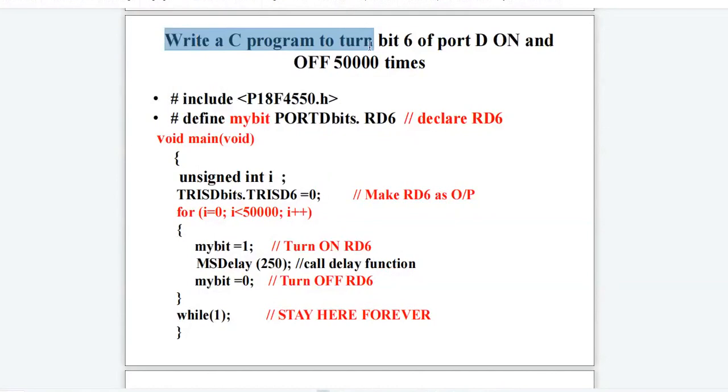Next program: write a C program to turn bit 6 of port D on and off 50,000 times. We have used hash define macro. As a programmer, it will be very difficult every time to write PORTDbits.RD6. So in order to take care of that, we have defined a macro, mybit.